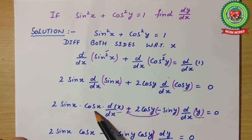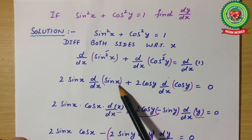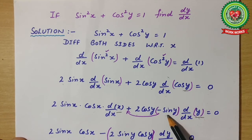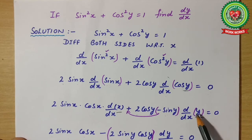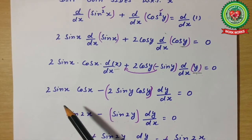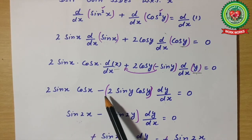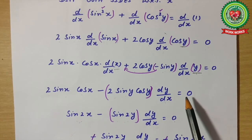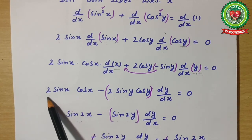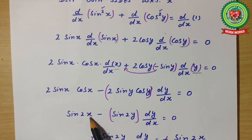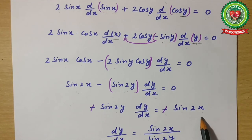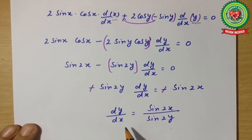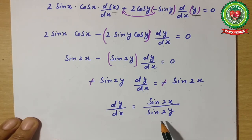2 sin x · cos x — since sin x differentiation is cos x and the angle is x — minus 2 cos y · sin y · dy/dx = 0 (cos y differentiation is -sin y, changing the sign, and the angle is y so dy/dx appears). We already know that 2 sin x cos x = sin 2x, and similarly 2 sin y cos y = sin 2y. Shifting dy/dx to the left-hand side, the negatives cancel, giving dy/dx = sin 2x / sin 2y.